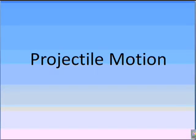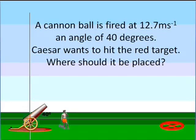In this video, you will learn how to solve a projectile motion problem that involves firing an object at an angle. A cannonball is fired at 12.7 ms at an angle of 40 degrees. Caesar wants to hit the red target. Where should it be placed?